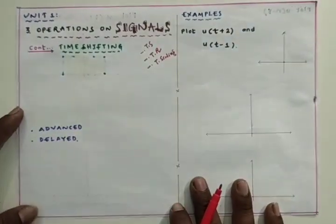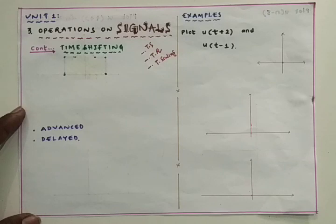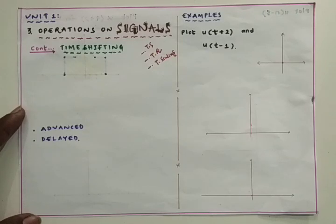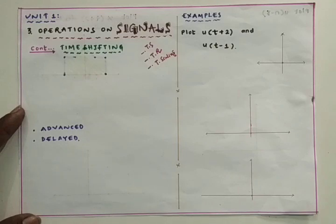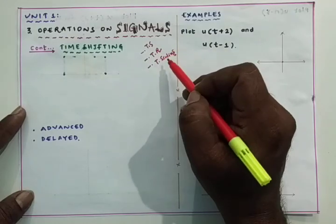A signal is a physical phenomenon which conveys information and is a function of one or more independent variables. The independent variable is t, that is time, and x(t) is a signal. By applying some operations on the independent variable, we can have three types of operations: time shifting, time reversal, and time scaling.